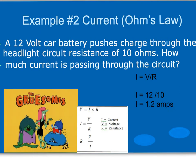A 12 volt car battery pushes a charge through the headlight circuit. The resistance is 10 ohms. How much current is passing through the circuit? We will use current equals voltage divided by resistance: 12 volts divided by a resistance of 10 ohms. The math shows that we have 1.2 amps passing through the circuit.